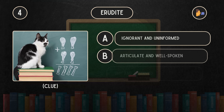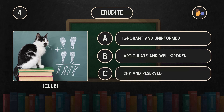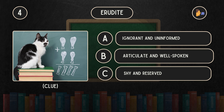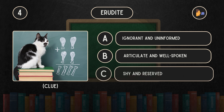What does erudite mean? Is it A: Ignorant and uninformed. B: Articulate and well-spoken. C: Shy and reserved.